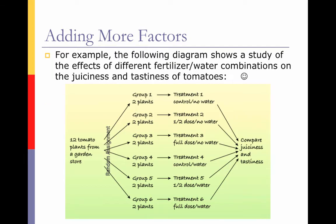The following diagram shows a study of the effectiveness of different fertilizer and water combinations on the juiciness and tastiness of tomatoes. We take 12 tomato plants and randomly assign them to six different groups, two plants in each group. Each group gets a different treatment: control with no water, half dose with no water, full dose with no water, control with watering, half dose with watering, and full dose with watering. Then you pick a tomato from each group and compare the juiciness and tastiness.